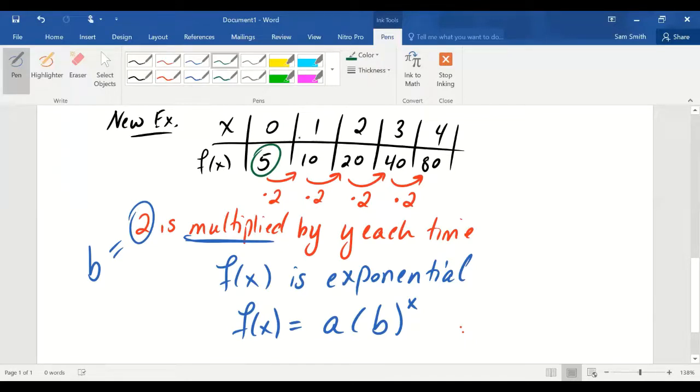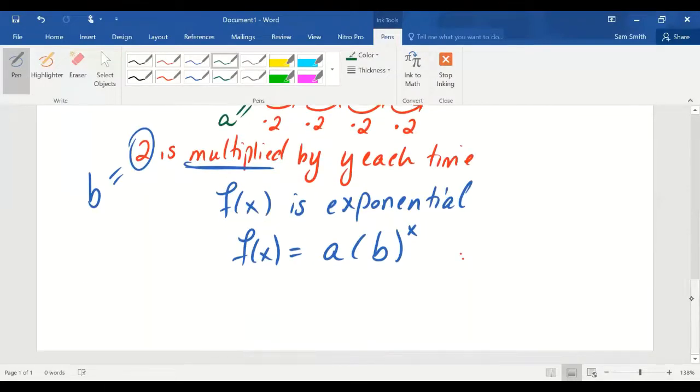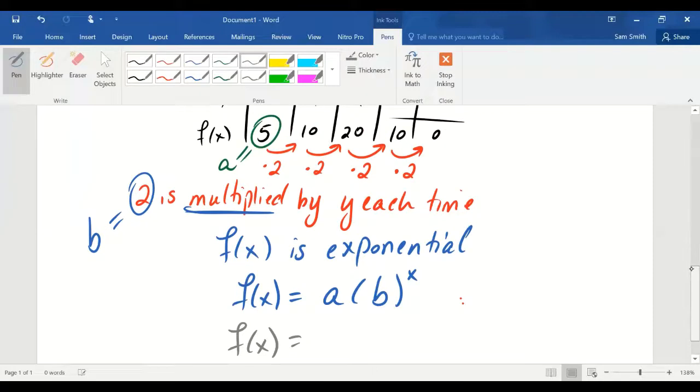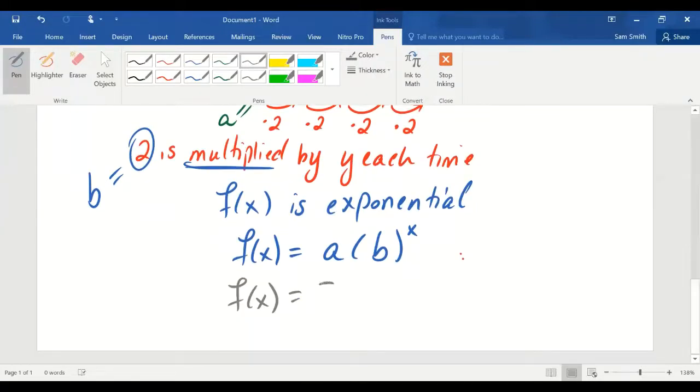If x is 0, the y that goes with that is your a value, just as with the linear case. So, this function has the format, the a value of 5, the base of 2, 2 being raised to an input x.